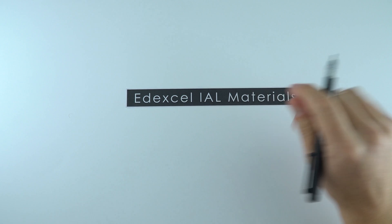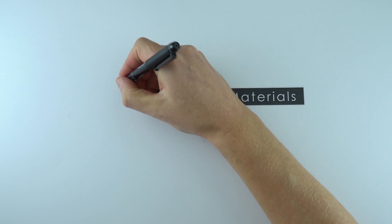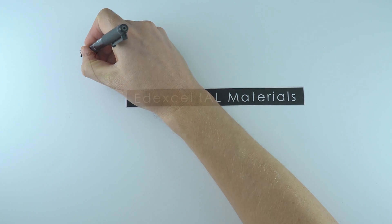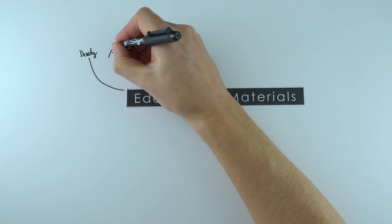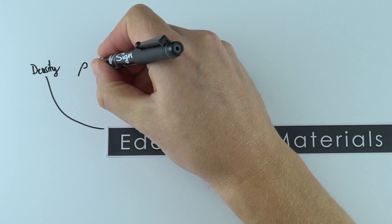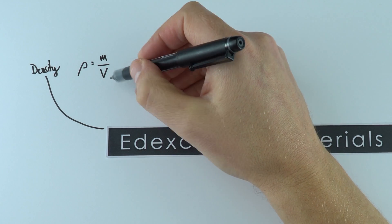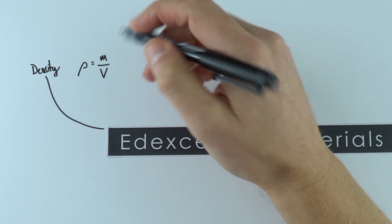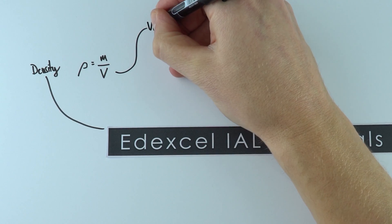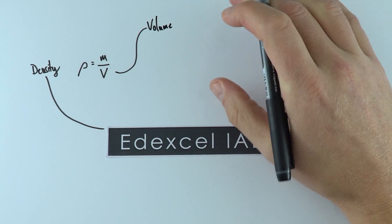This video is a summary of Edexcel IAL materials and the first topic is looking at density. Density, which we use the letter rho for, is equal to the mass per unit volume. Normally we measure mass in kilograms and volume in cubic meters. In terms of volume, it's worth remembering how to calculate the volume of certain shapes.